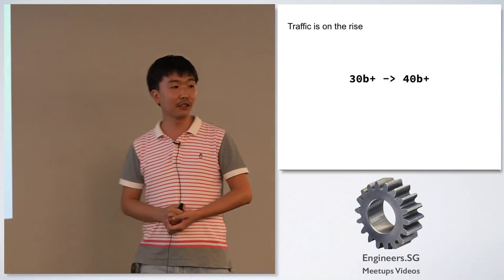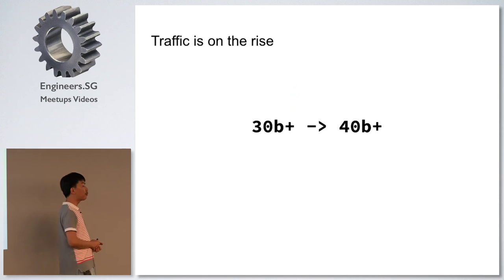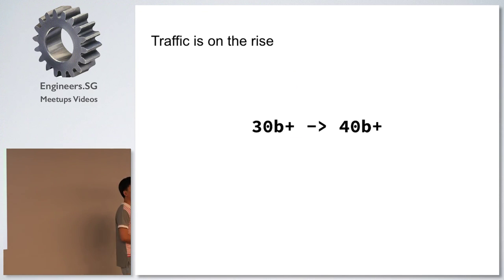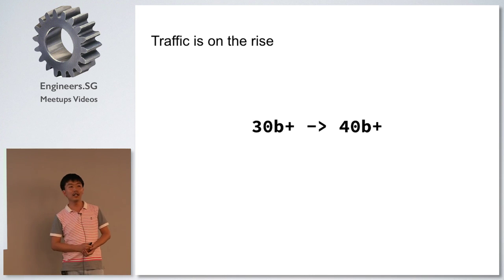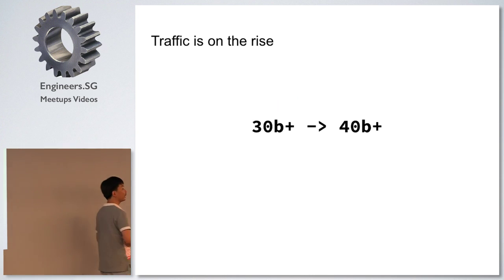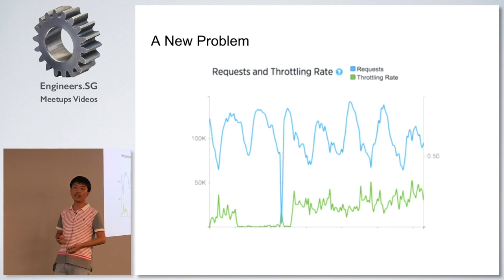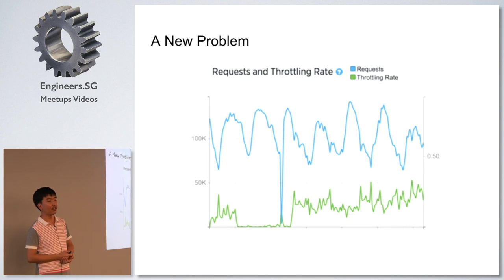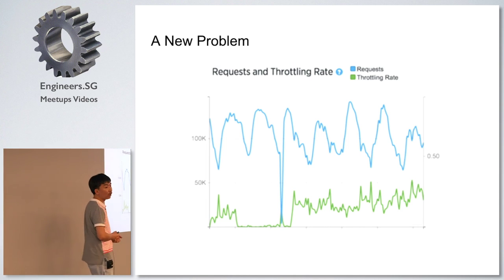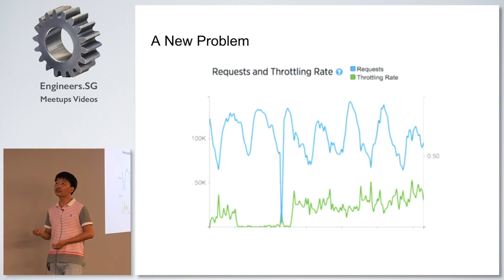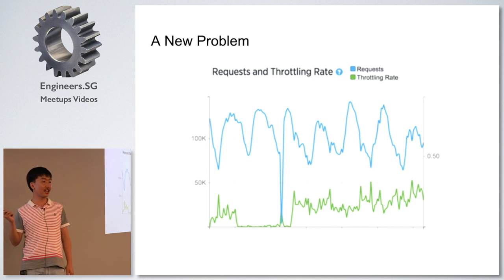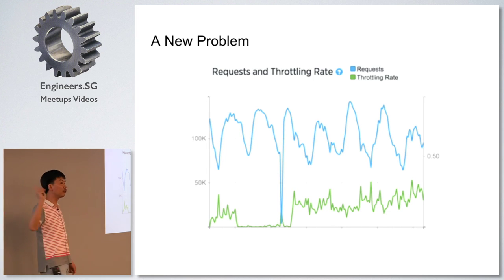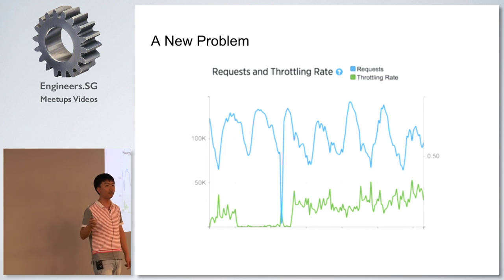Our traffic started to grow as we approached the end of the year. Early last year we started at 30 billion requests; then we grew to 40 billion. Anytime something starts to grow, new problems arise. This graph comes from the exchange — that's the external view of PocketMath's performance. The blue line shows how much traffic the exchange sent to us. The green line shows the percentage of throttling — around 50%.